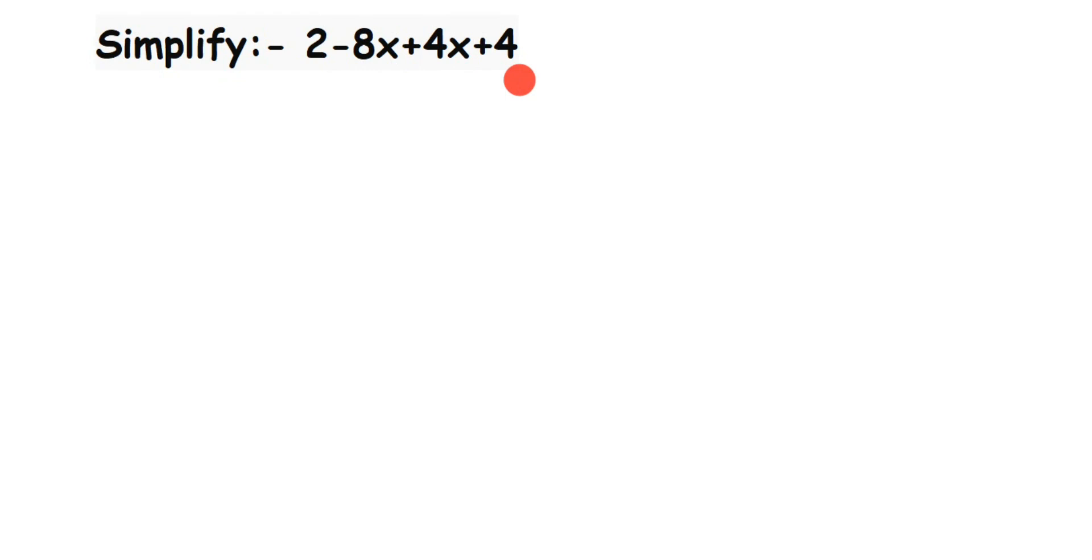So let's write down the question first. We have 2 - 8x + 4x + 4. Now when you're solving this, you have to solve the like terms.